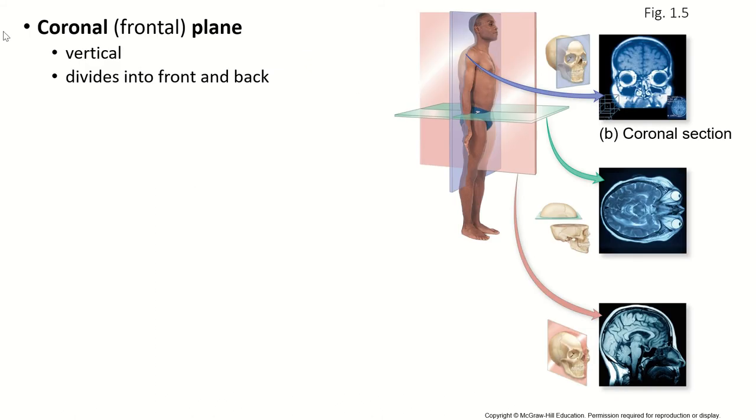So the first plane that we're going to learn is called the coronal or the frontal plane. I prefer coronal, but you do need to know both of these names. This is a vertical plane that separates the front of the body from the back of the body. So if we do a coronal section through the skull or through the head, we can see part of the brain, the eye sockets, the nasal cavities.